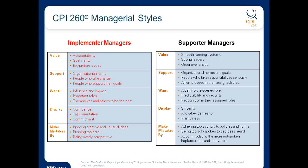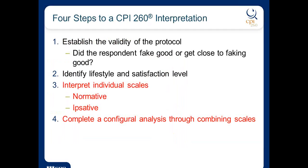Research by Pete Meyer and Sandra Davis identifies what various managerial styles look like for the four CPI lifestyles. John scored as an Implementer at level seven. Implementers value accountability and goal clarity. I can see what they support, what they want, what they show — and already I'm getting words to describe John's strengths and style. I also see possible mistakes, like ignoring creative or unusual ideas, or being too competitive and pushing too hard.